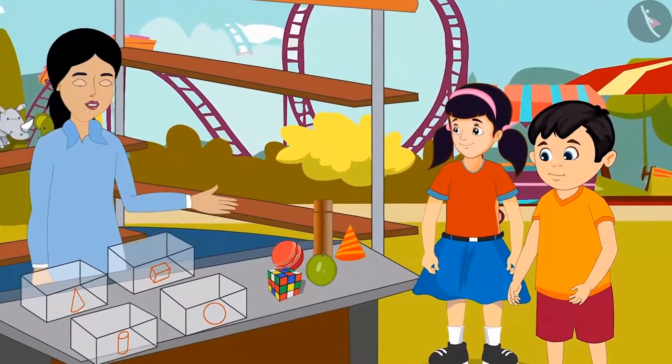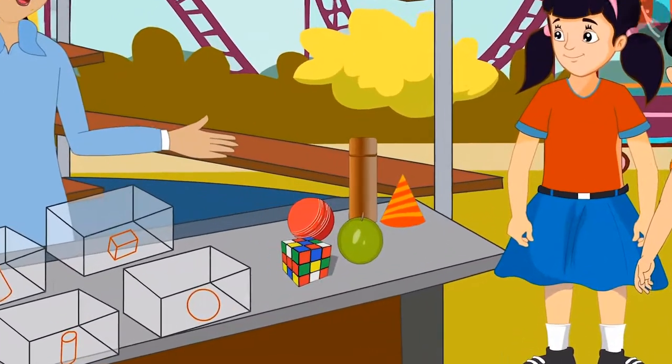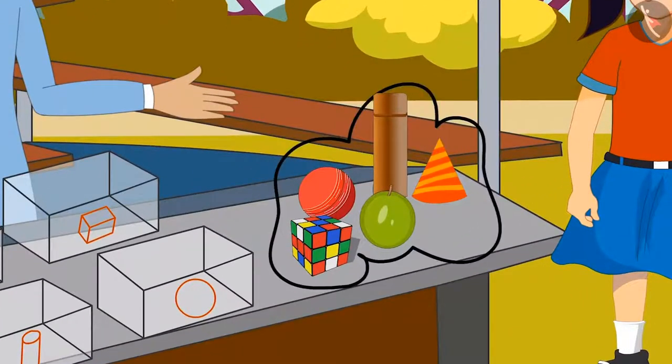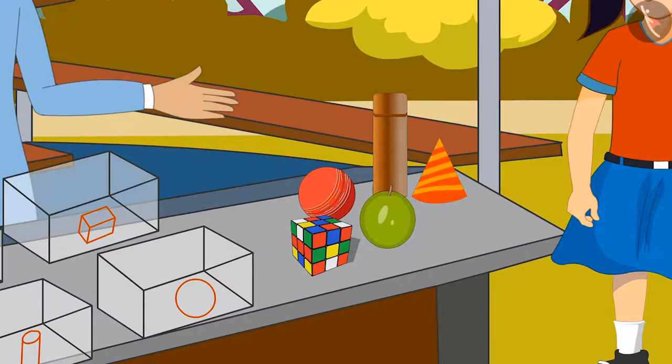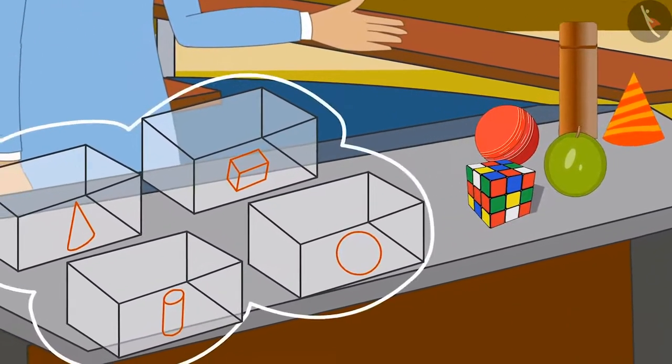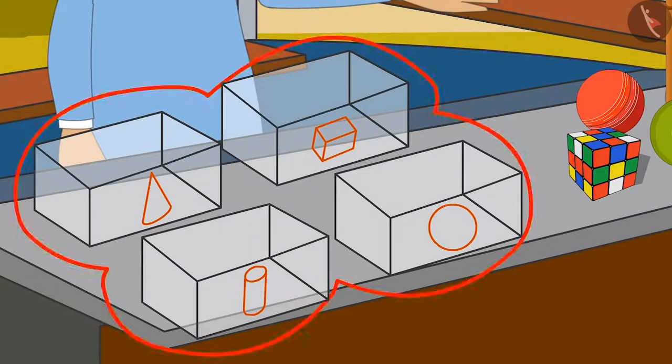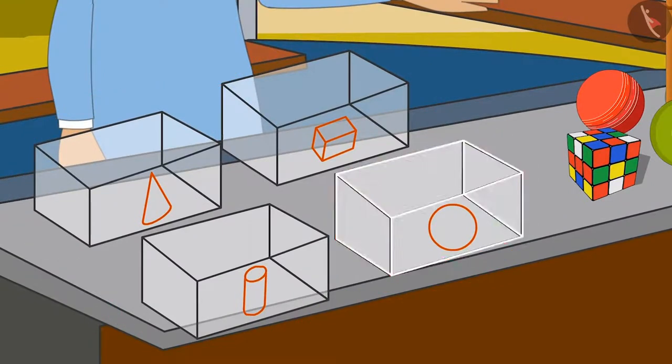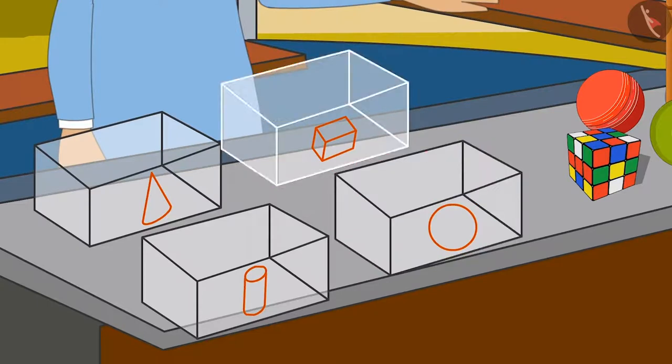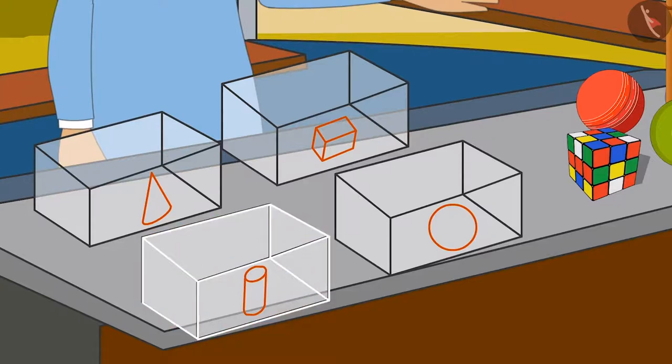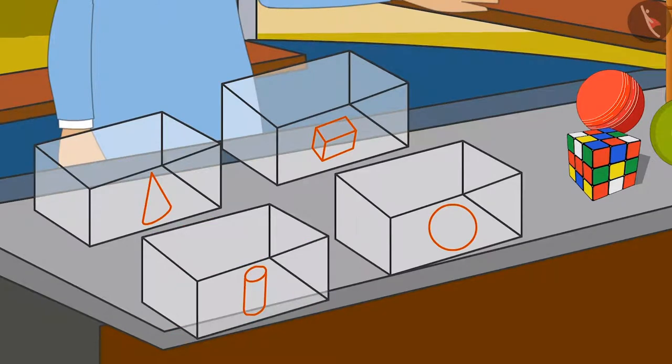In this game, you have to sort all the items placed on the table one by one by identifying their shape and place them in four different boxes. In the first box, round ball-like objects. In the second box, box-like objects. In the third box, cylinder-like objects. And in the fourth box, ice cream cone-like objects.